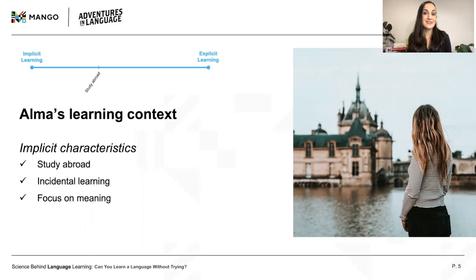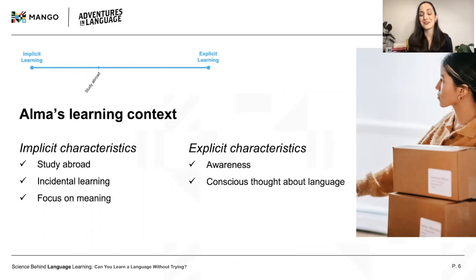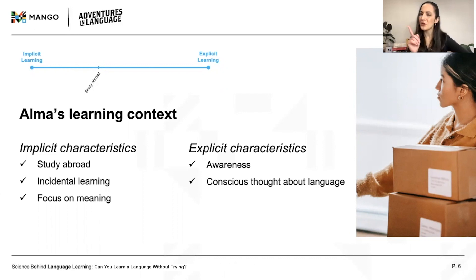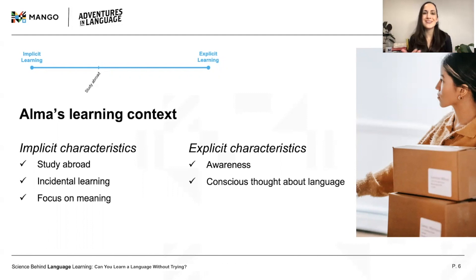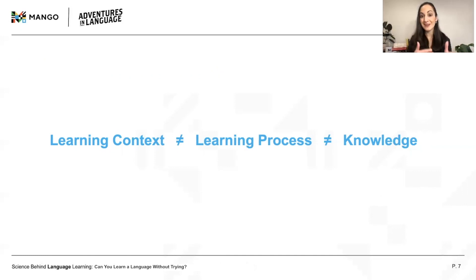This all describes Alma's learning context, but is it purely implicit? Let's think about this for a minute. Alma is a young adult who's perfectly aware of the fact that she's living in another country, partly for the purpose of learning French. So while much of her learning may happen incidentally, a good amount is probably also intentional. Before going to the post office, she might think about how to formulate a question to request first-class postage — should I say première? No, it's prioritaire. Maybe she'd even practice it a few times. When it comes to implicit and explicit learning, it's easy to confuse the context, the process, and the resulting knowledge — but these are actually all distinct things.